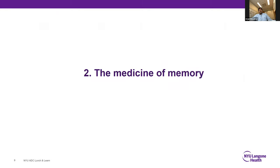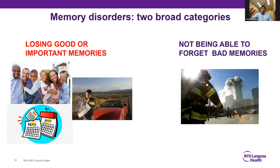Now that we've covered the basics of thinking and memory, we can turn to the medical aspect. You could think about memory disorders in two ways. There are diseases of losing memory — losing memories of things that are important or have emotional value, like memories related to family or friends, or being able to function at a job. There's also the flip side: memory disorders related to not being able to forget traumatic things, like PTSD. I'm going to focus on the former, as that's my expertise and is very relevant to Alzheimer's disease and other dementias.